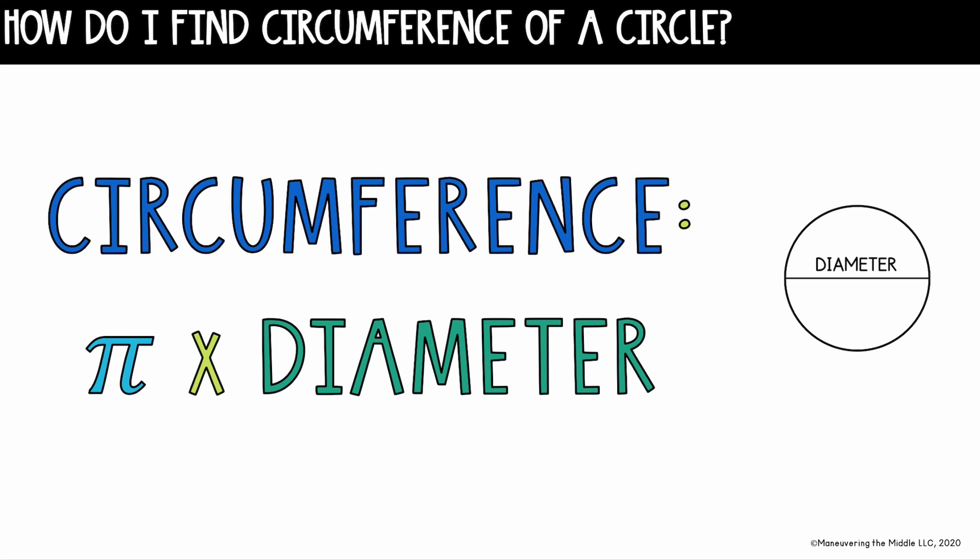To find circumference, you're going to multiply two values, the value of pi times the diameter. A couple of things to note here. Pi is the ratio of the circumference of any circle over the diameter. It's an irrational value, meaning that it never ends, it never terminates.